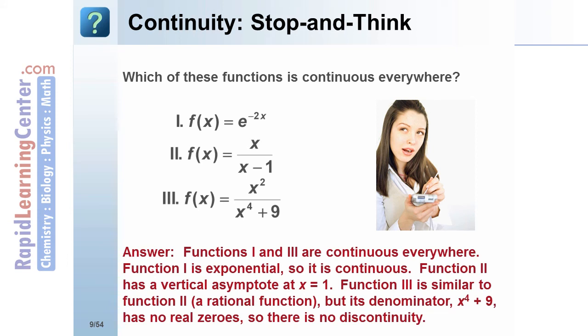Functions I and III are continuous everywhere. Function I is exponential, so it is continuous. Function II has a vertical asymptote at x = 1. Function III is similar to function II, a rational function, but its denominator, x^4 + 9, has no real-valued zeros. So there is no discontinuity.